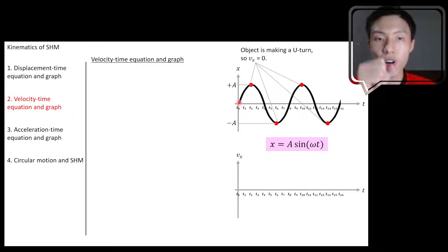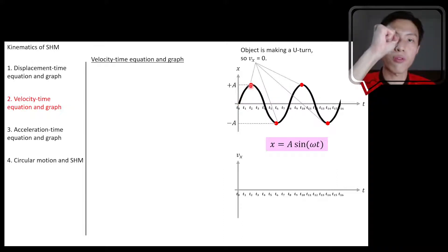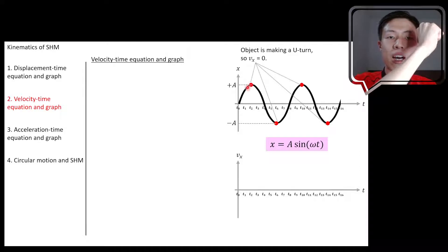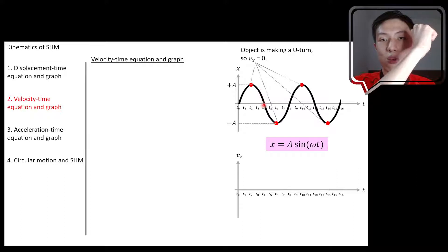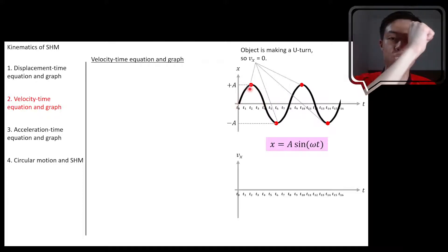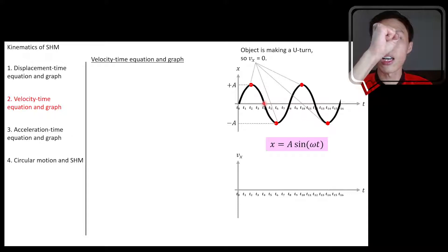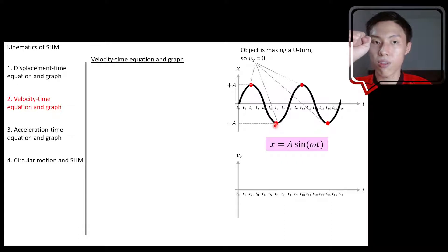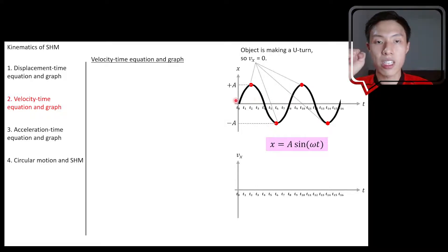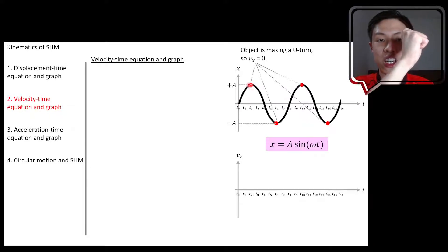The object is at the equilibrium position, then moves towards positive A — moving to the right. After it reaches the positive maximum displacement (the red dot), it makes a change in direction to move towards the equilibrium position. So previously it was moving to the right, reached positive maximum displacement, then moved to the left. It continues past equilibrium towards x = -A, so the whole motion from positive A to negative A is to the left, while the motion from zero to positive A is to the right — there's a clear change in direction in between.